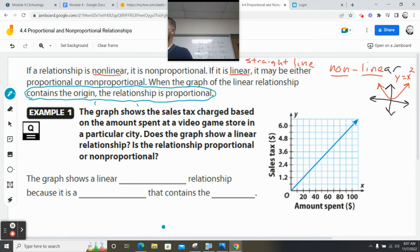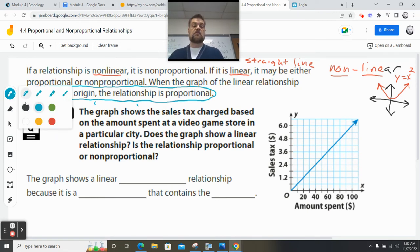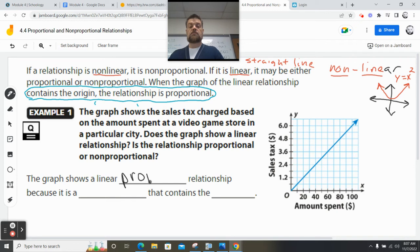Zero, zero. So first of all, you got to look for two things. If it's a straight line, good. And then if it goes through the origin, then we know it's proportional. So let's fill this out and see what we got. The graph shows a linear, proportional relationship because it is a line—that's the linear part—and it contains the origin.